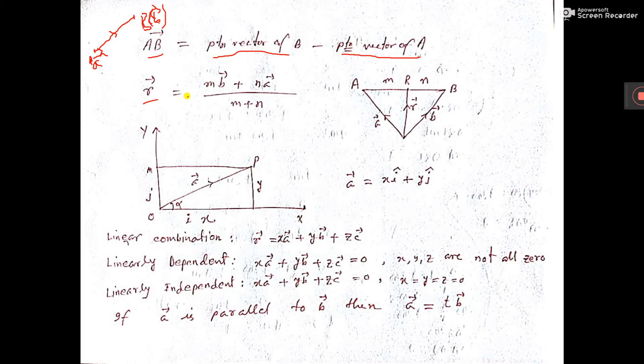Now, R vector. Let's say this is the origin and this is vector R. This is vector A, that is, this is position vector of A. And this small b vector means position vector of B. And this is position vector of capital R.